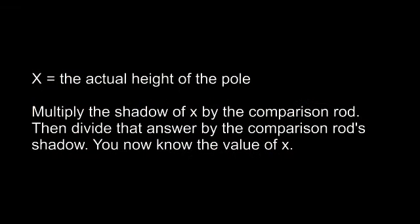X equals the actual height of the pole. To determine what the height is, multiply the shadow of X by the comparison rod. And when that answer is found, divide that answer by the comparison rod's shadow.